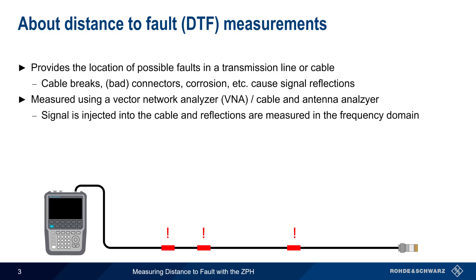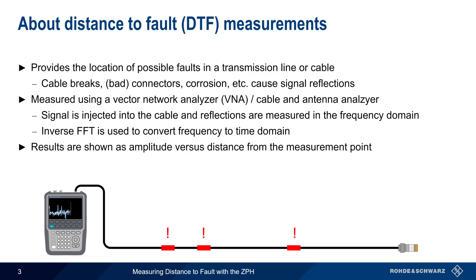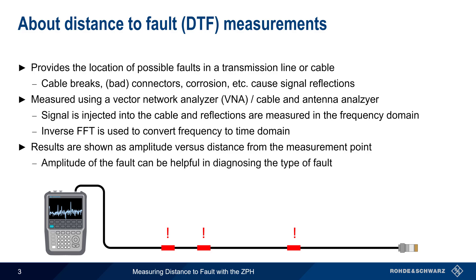At a high level, this is done by injecting a signal into the cable under test, and then measuring the reflections in the frequency domain. An inverse fast Fourier transform, or IFFT, is used to convert this frequency domain information into the time domain. These time domain results are plotted as amplitude versus distance from the measurement point. In some cases, the relative amplitude of the fault can also provide information as to the nature of the fault, or the cause of the reflection.